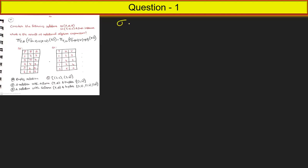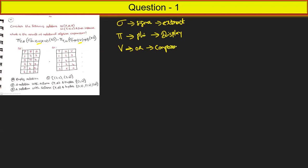This is sigma — that is nothing but the select operation used to extract the data. This is pi, and we use it to display the data. And then we have the R symbol, which is a comparator. We also have the not equal to and equal to symbols — those are the relational operators.